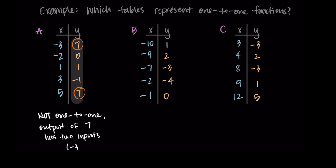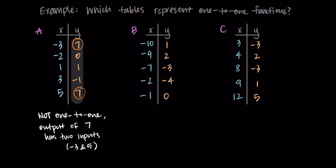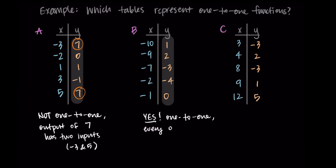Next let's look at table B. First I check to see if it's a function — all the inputs show up only once, so every input has only one output. Now I check for one-to-one by looking at the outputs. Since each output shows up only once, there's only one input that corresponds to it. So yes, B is one-to-one: every output has only one input, and every input has only one output.